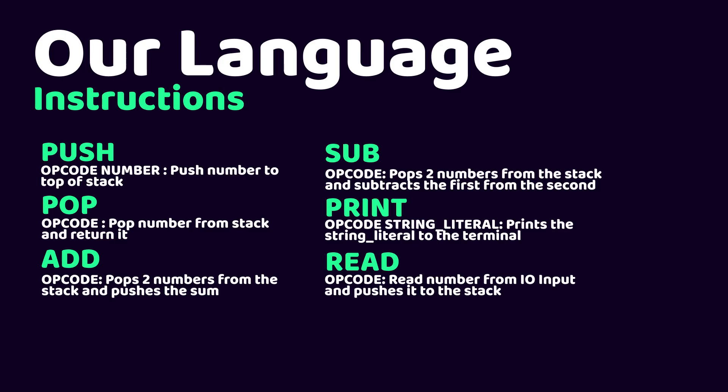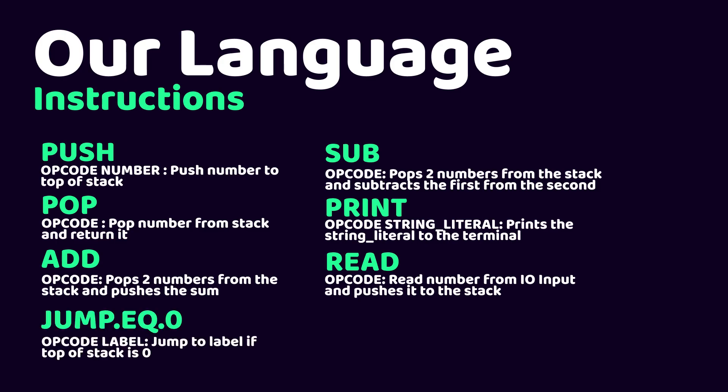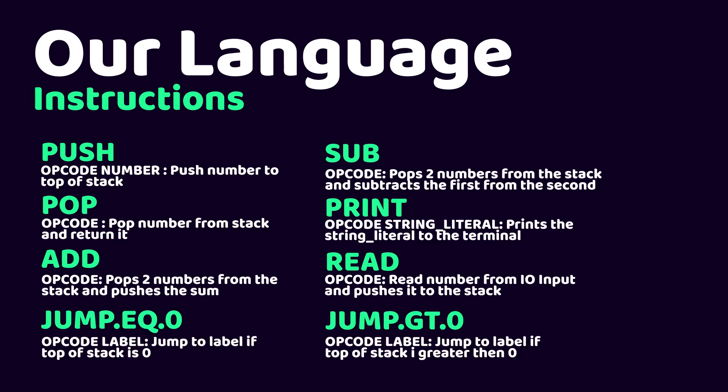We then have the print and read instructions, where print is given by the opcode followed by a string literal, and it outputs that string to the terminal. For the read instruction, we only expect the opcode, and this allows the user to input numbers into our program. To make our language more interesting, we introduce branching and loops using labels. Labels allow for two more instructions: jump when equal to 0 and jump when greater than 0. For both, we expect the opcode and a label. The jump-when-equal-to-0 instruction checks whether the top of the stack equals 0 and jumps to that label if so; otherwise, it continues to the next instruction.